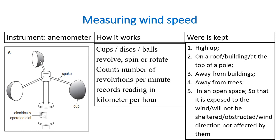Next, how do we measure wind speed? Wind speed is measured using an instrument called the anemometer. This instrument has cups or balls that revolve and rotate. You count the number of revolutions per minute and record your reading in kilometers per hour. The anemometer is kept high on the rooftop of a building, away from trees and in an open space, so it is exposed to wind and free from any obstruction, giving you an accurate reading.